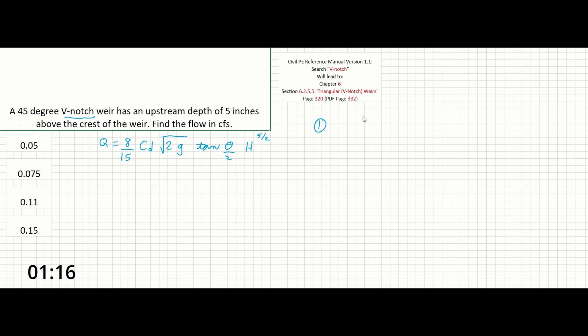So first we could just solve for tangent of theta over 2 and because this is a 45 degree V-notch weir it's going to be tangent of 45 over 2. This should give us an answer of about 0.414. Make sure you're in degrees on your calculator not radians.